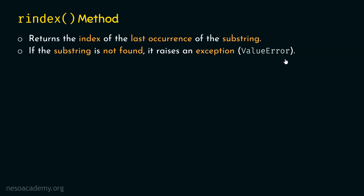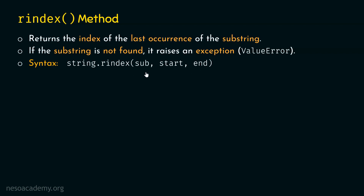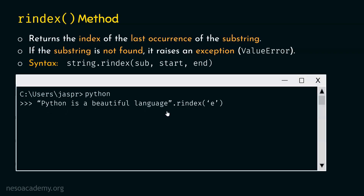Now let's see the syntax. We need to provide the string first, then the dot operator, then the rindex method itself. We can provide three arguments — the two optional start and end arguments, while the substring argument is mandatory. Let's open the command prompt and type: 'python is a beautiful language'.rindex('e'). If we hit enter, we will get 29 as a result, because rindex always returns the index of the last occurrence of the substring. The last occurrence of 'e' is at index 29.